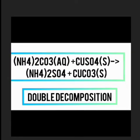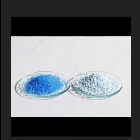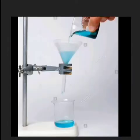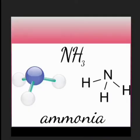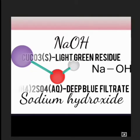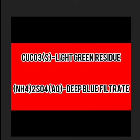When you combine these two salts, it's going to give you an entirely different thing. The first test is called the solubility test. You add 10 cm³ of distilled water to salt C. What you will observe is a light gray residue with a deep blue filtrate. That light gray residue is actually copper carbonate, and the deep blue filtrate is actually ammonium sulfate.